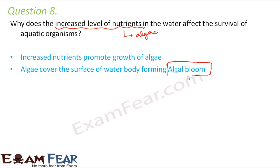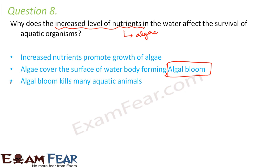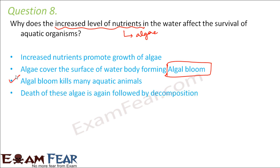Algae covers the entire surface of the water body, and as a result, the algae starts competing with other aquatic organisms, causing them to suffer. The presence of algal bloom will kill many aquatic animals, as it also produces toxic substances.